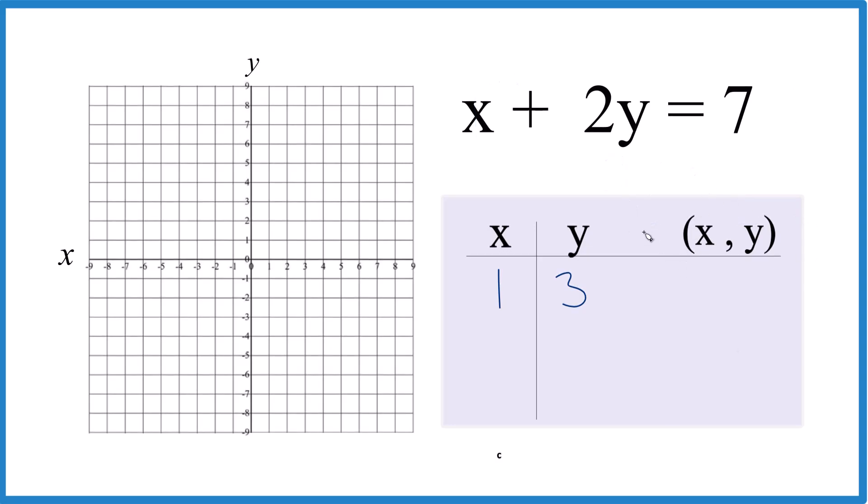I'm just picking these points. I'm just making up numbers that I think will give me whole numbers and will fit on the graph here. So you can use any numbers. They're going to show up on the line for x plus 2y equals 7. But if you're smart, you can make it easier for yourself.